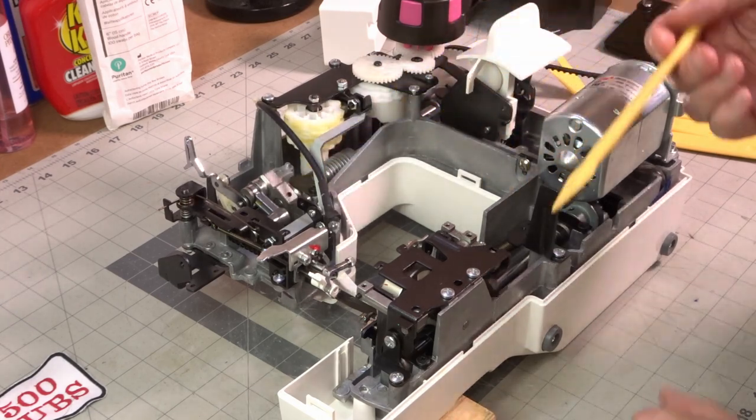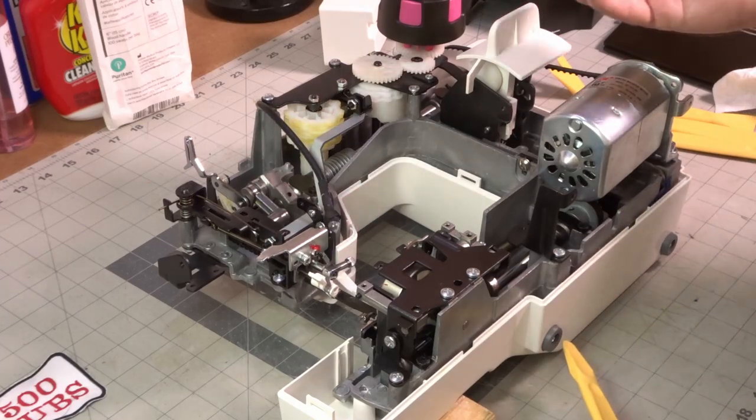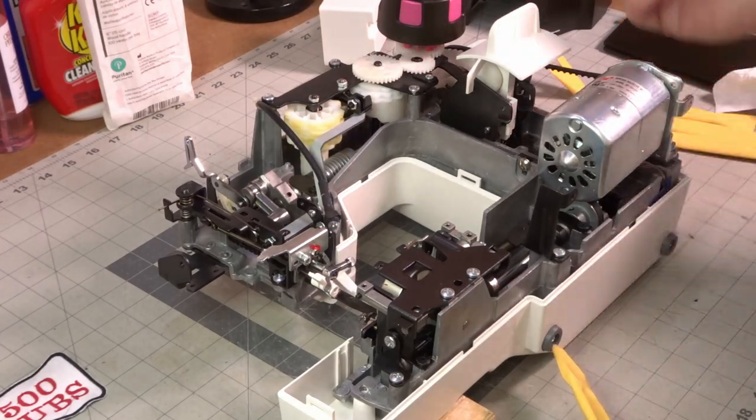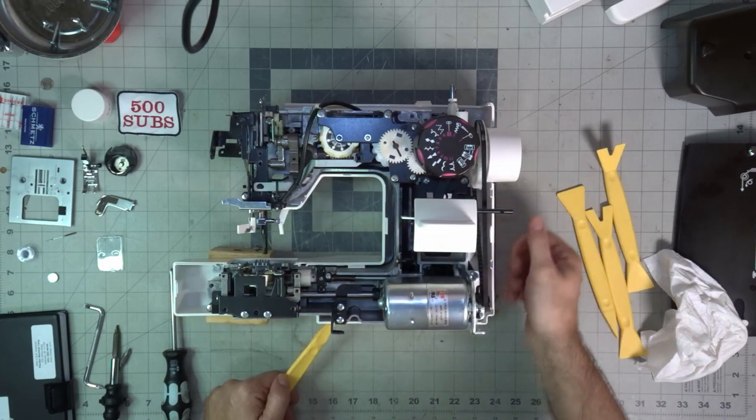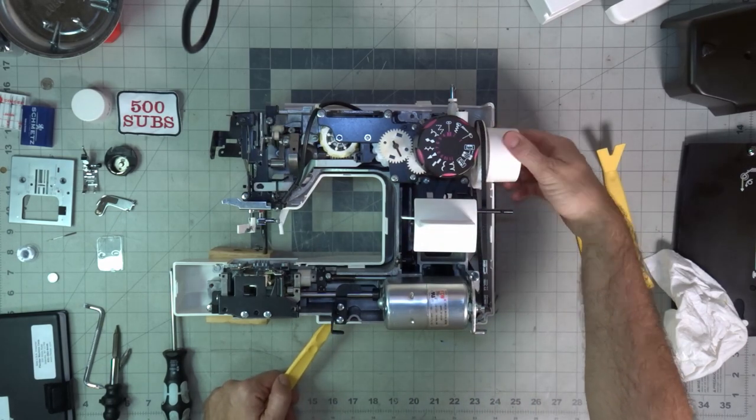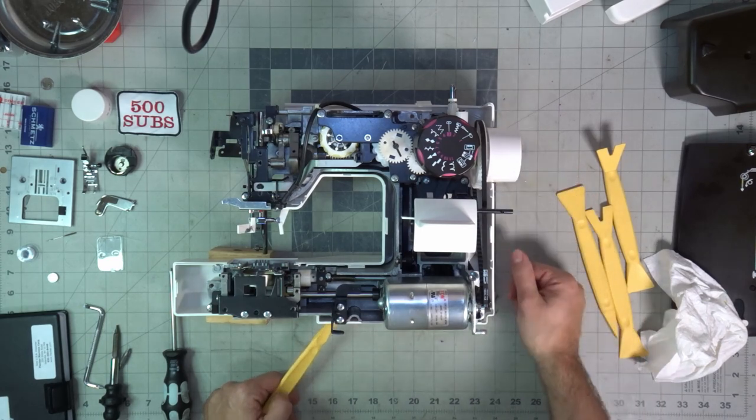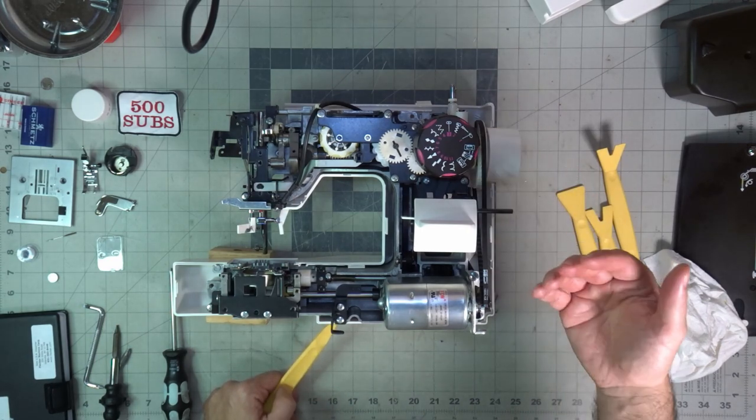Now, over time, the oil is going to go away. It's going to either come out or it's going to kind of evaporate away. And, you've got to replenish it. And, that's what sewing machine manufacturers don't make any provisions for.